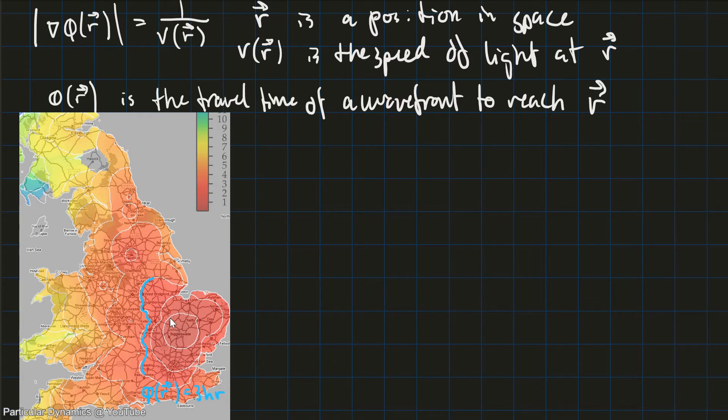So this line represents all the positions r. And this line continues, of course. It represents all the positions r where the travel time is three hours. So phi of r equals three hours.